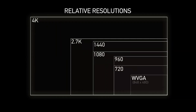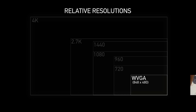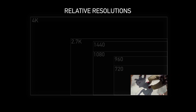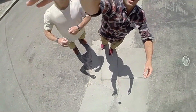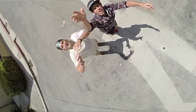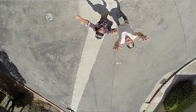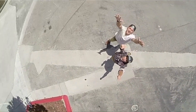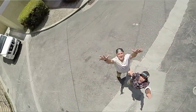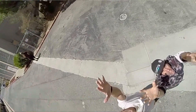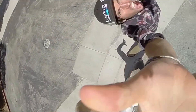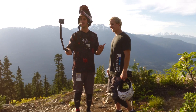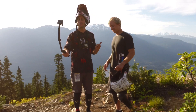Last but not least on the list is WVGA 240. WVGA is a lower resolution mode than 720p and it can film up to 240 frames per second. It's not going to look great blown up on a huge TV, but if you're doing something for the web or Instagram video, it's an awesome mode to use and a great way to experiment with really cool slow motion effects.